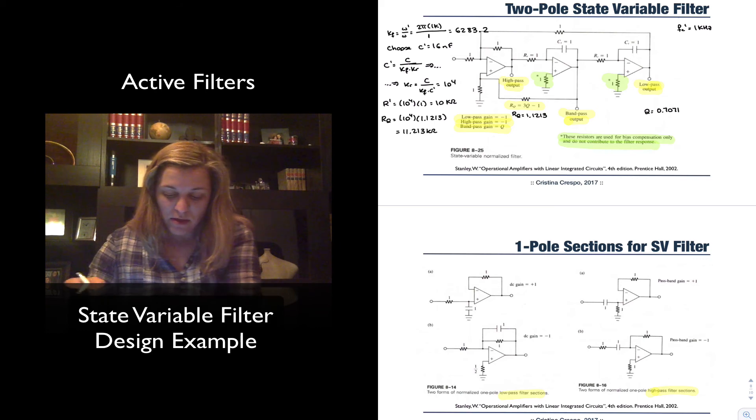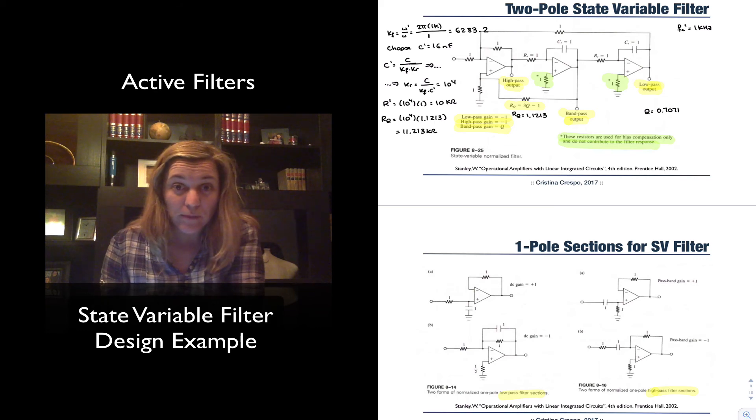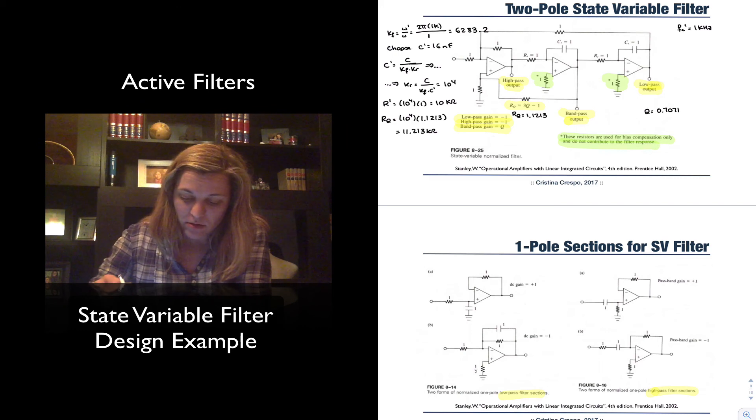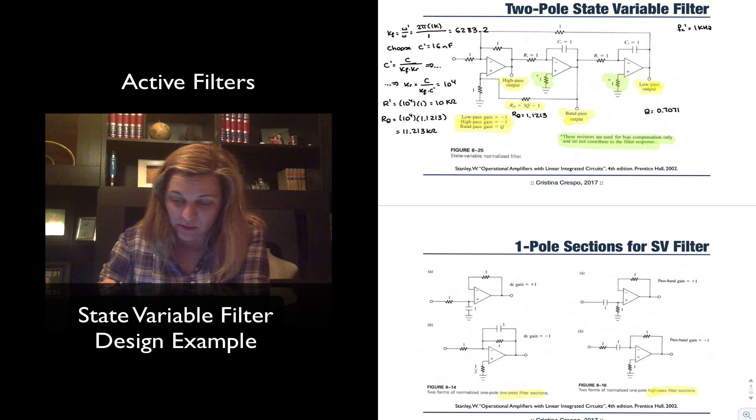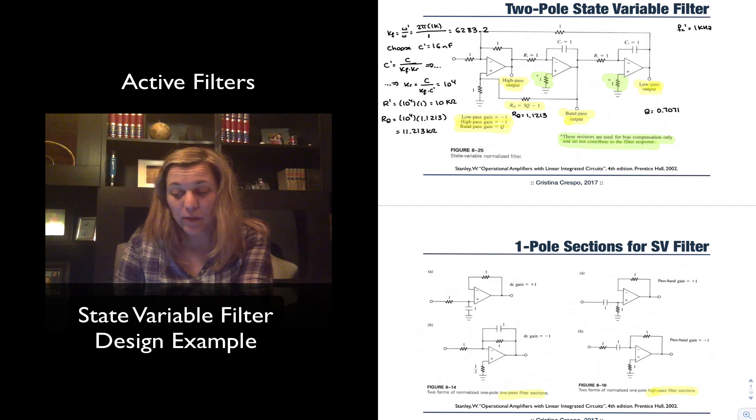And so basically, what my design will be to generate a second order state variable filter with a kF of 1 kilohertz, it will be this circuit, where every resistor of value 1 is replaced with 10k, resistor RQ is replaced with 11.213 k, and my capacitors are replaced with 16 nF. There are two of them in the feedback loops of the second and third op amps.